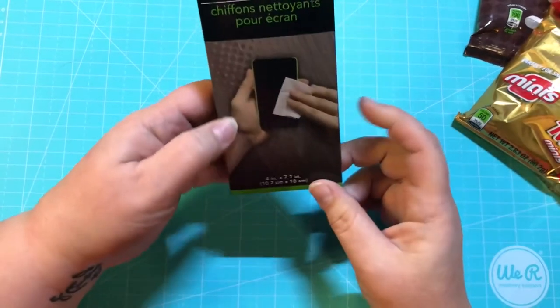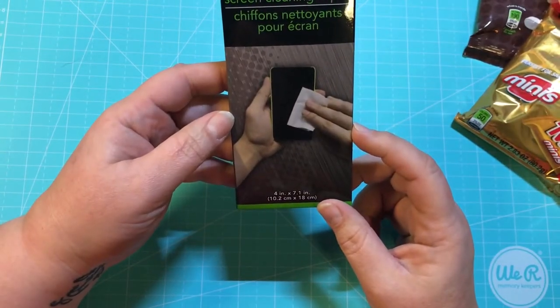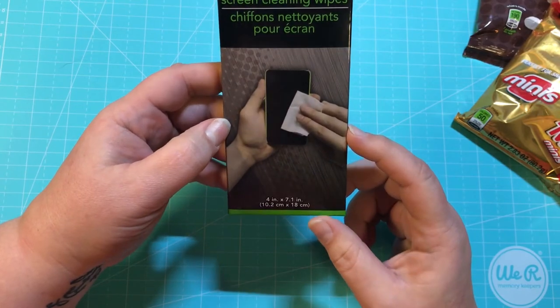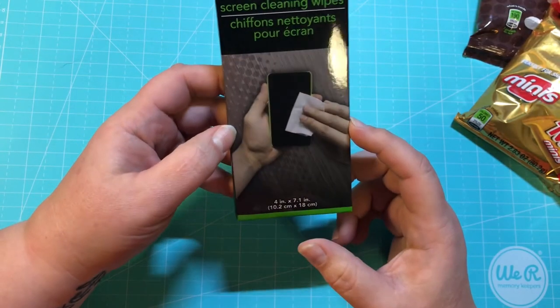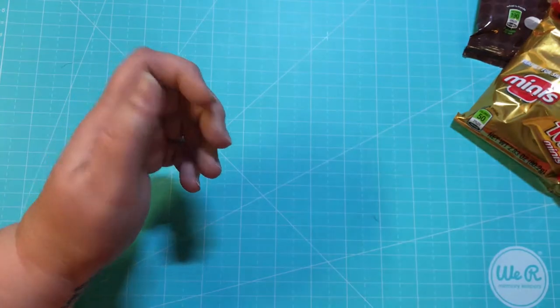Something a little practical - I did get the screen cleaning wipes. There's 20 of them in here. Everybody can use these, of course everybody's got a cell phone.